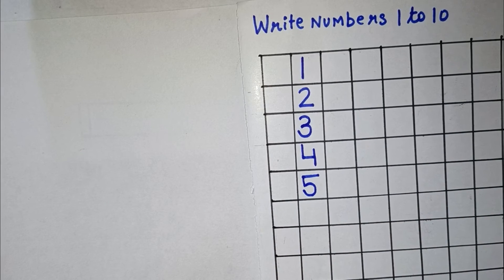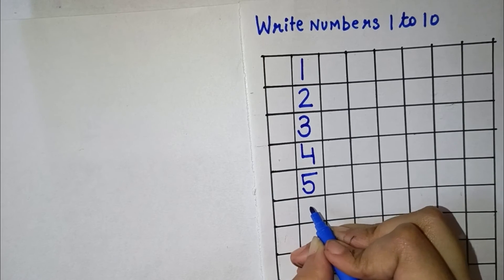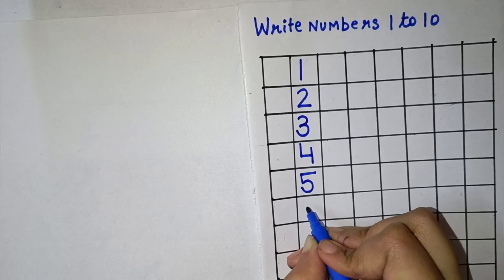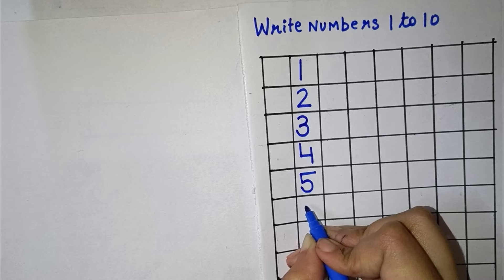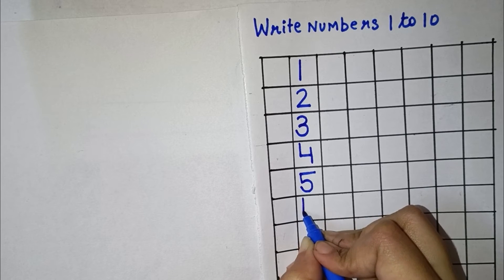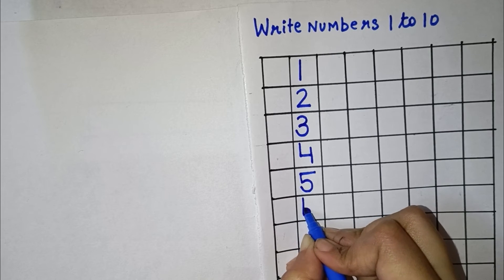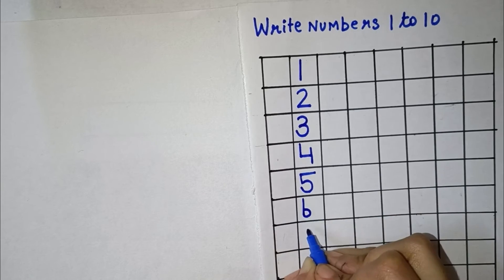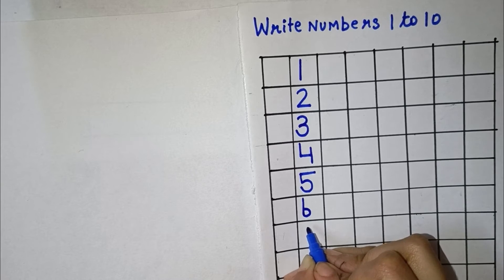Now the next number we have to learn is 6. So for 6, we will draw a standing line and a right curve. This makes number 6.